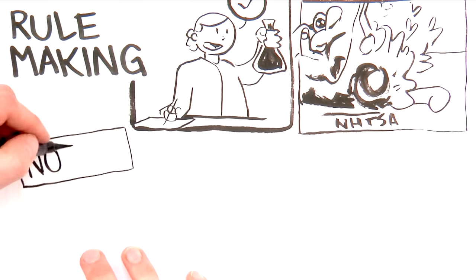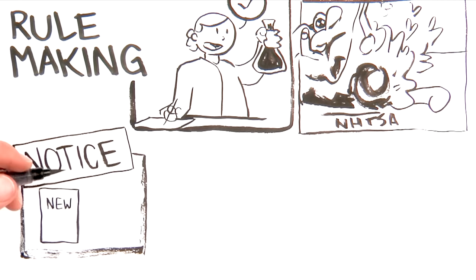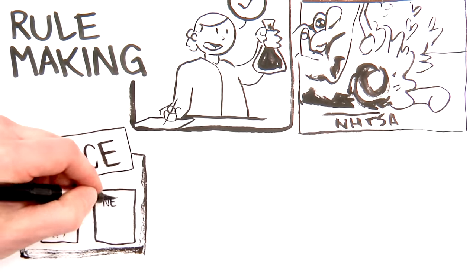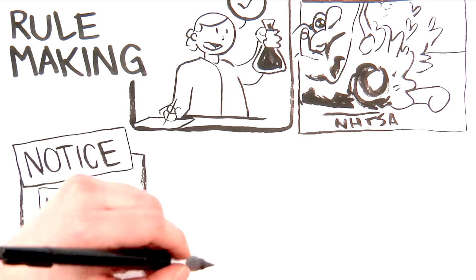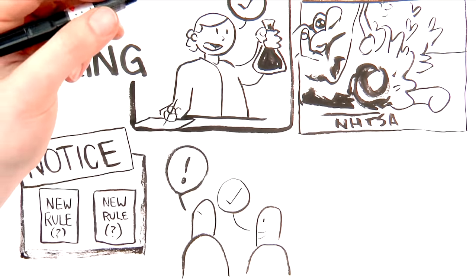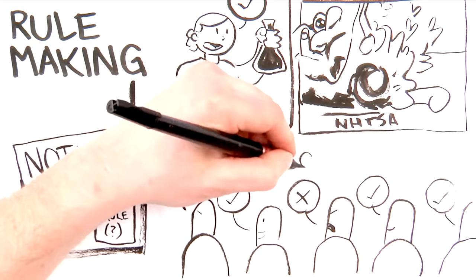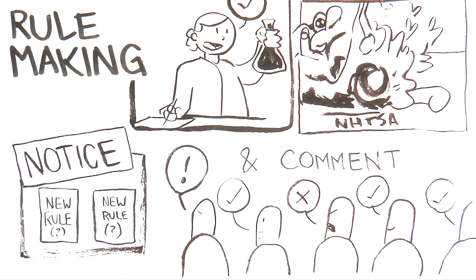The APA says that most rules made by an agency must be open to notice and comment. This means that a notice of the proposed rule is printed up in the giant federal list of proposed rules, and the agency has to accept comments about the rule from all interested parties. The APA also says that the agency must respond to any comments that are substantial.